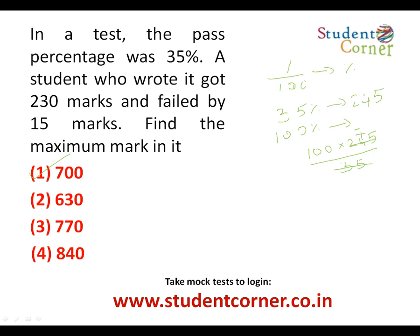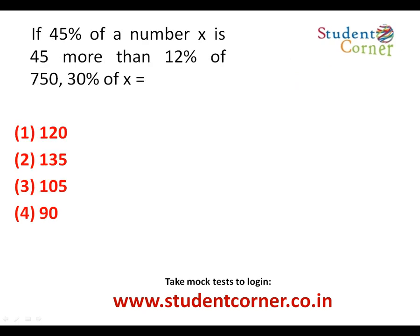This is the first basic equational model in percentage. The question is: if 45% of a number X equals 45 more than 12% of 750, we need to find 30% of X. Here, 45% means 45/100 of X, and 12% means 12/100 of 750.